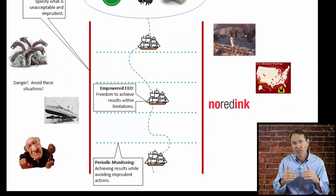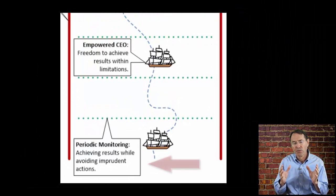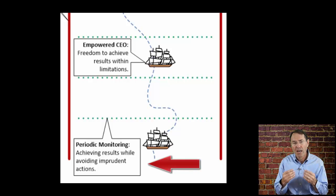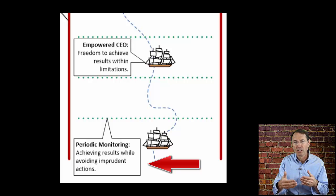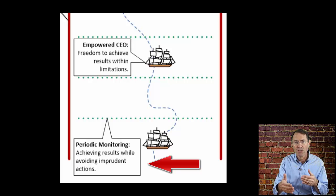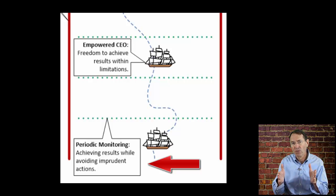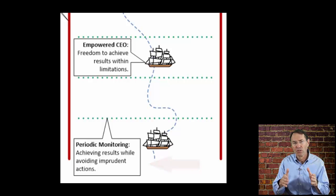Then the last step is for the board to monitor compliance with the policies. It needs to know whether the ends are being achieved or whether progress is being made toward those ends. They also need to know that the boundaries are not being exceeded and that the organization is not acting imprudently.